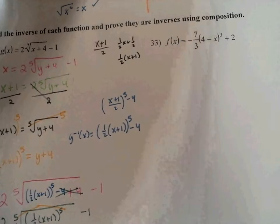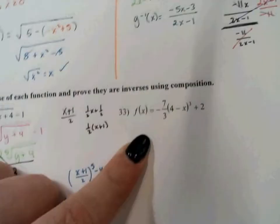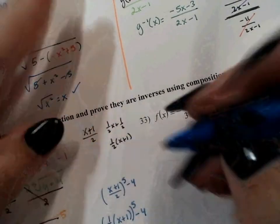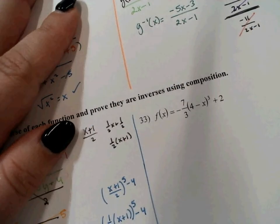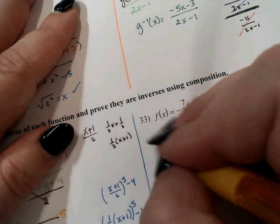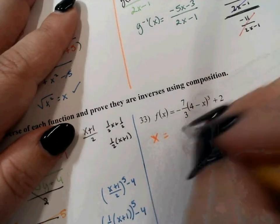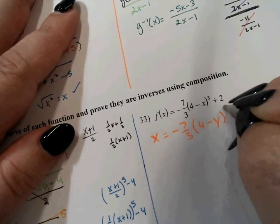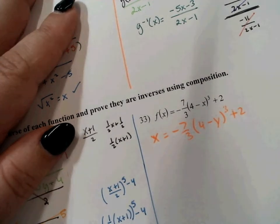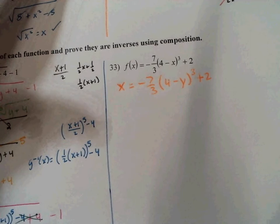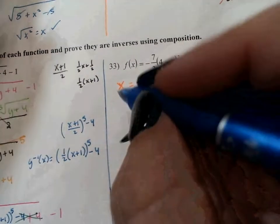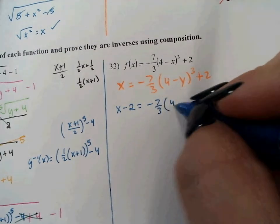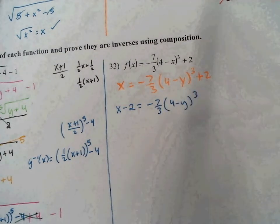Now we're going to do the same thing with number 33. We'll start by switching x and y. So x equals negative 7 thirds times 4 minus y, quantity cubed, plus 2. The outermost operation is the plus 2, so I'm going to subtract that over: x minus 2 equals negative 7 thirds times 4 minus y, quantity cubed.